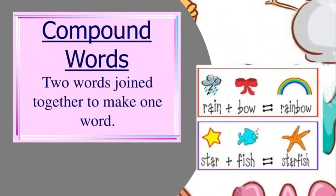Compound words are two words joined together to make one word. Let's take a look at these examples. We have the word rainbow. If we want to break apart the word, it's going to be rain and bow. When we join them together, they make up the word rainbow. We have the words star and fish. When we join them together, we have the word starfish. These two are examples of compound words because each word is made up of two words joined together.